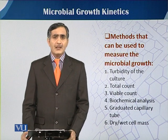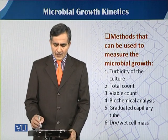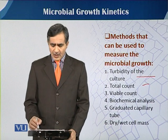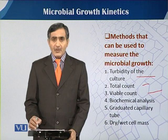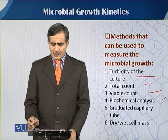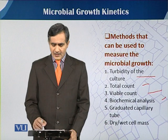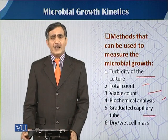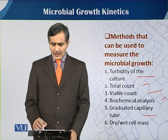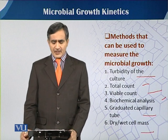The first method is the turbidity method, and the second is total count. Third is the viable count, fourth is biochemical analysis, fifth is the physical method called the graduated capillary tube, and the last is dry or wet cell mass estimation.